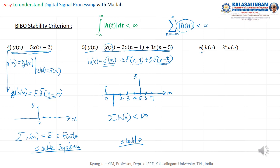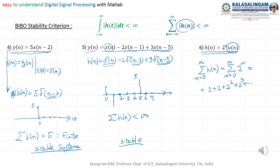How about this next one? The summation of H(N), because of U(N), equals summation from N equals zero to infinite of 2 to the power of N. This equals one plus two plus two squared plus two cubed... This is definitely infinite. Therefore, we call this an unstable system.